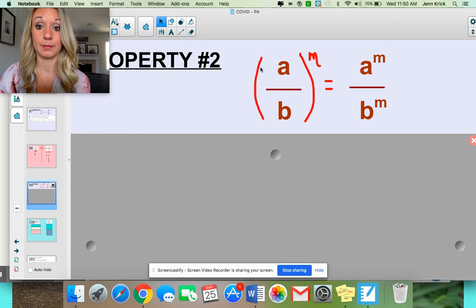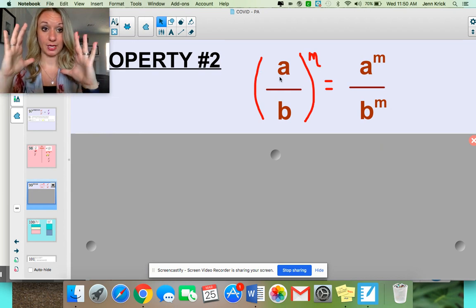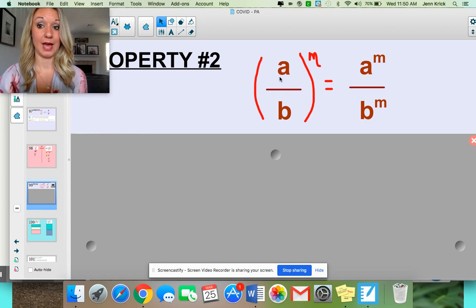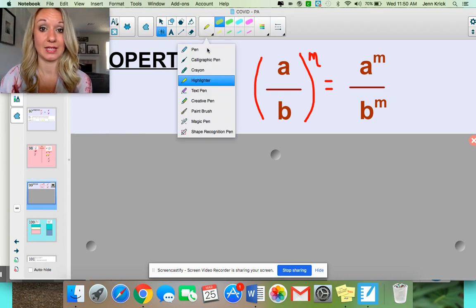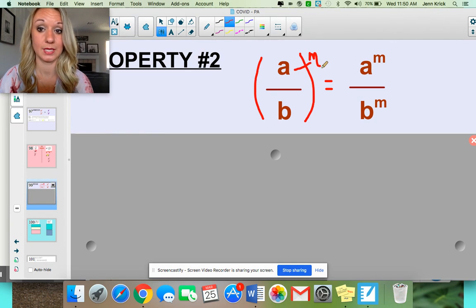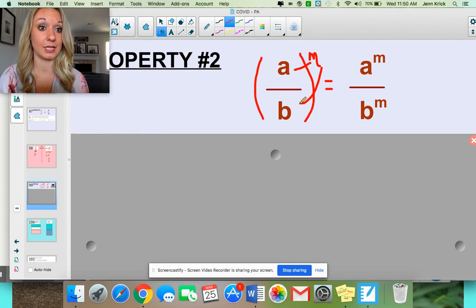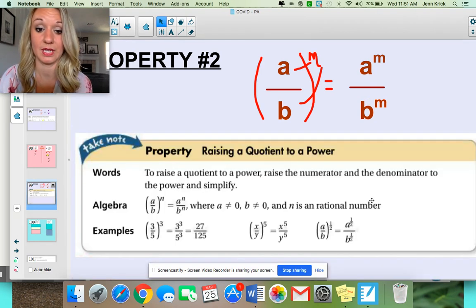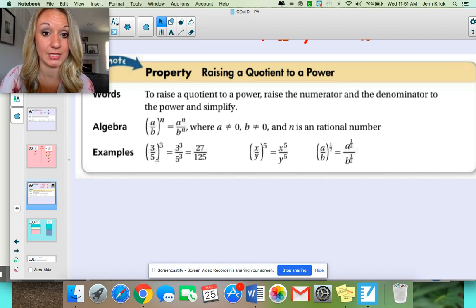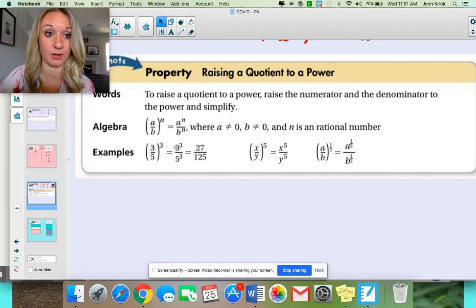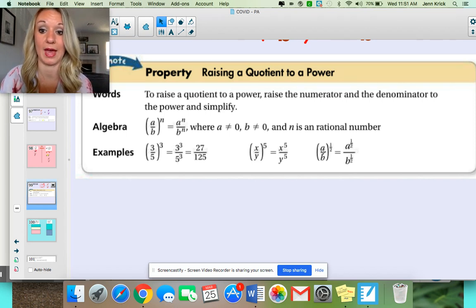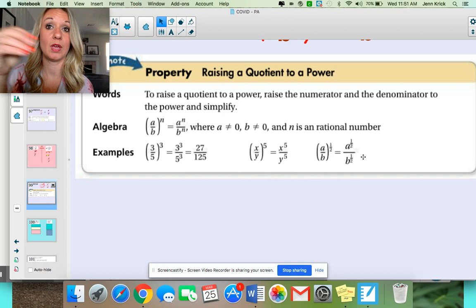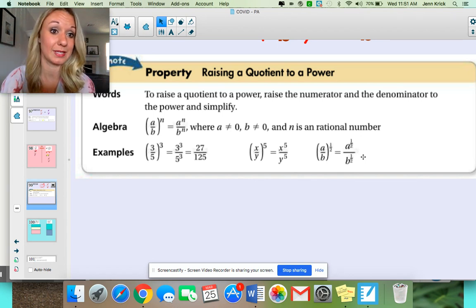Moving on to property number two. Now you're looking at a fraction inside of parentheses with an exponent on the outside. I always think about this in my head as distributing this exponent to both pieces so that your numerator and your denominator get it. So it'd be a to the m power over b to the m power. If you had 3/5 to the third power, it'd be 3 to the third over 5 to the third. And then you can individually simplify your numerator and denominator. If you had a over b to the one half power, it'd be a to the one half power, b to the one half power. So you're just making sure that every single piece inside of those parentheses gets the exponent.